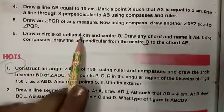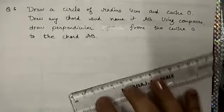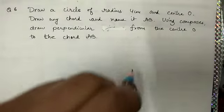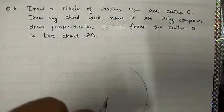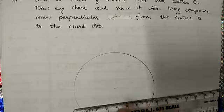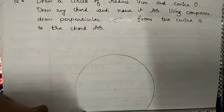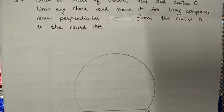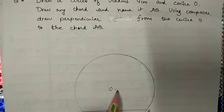Sixth question I am going to discuss with you. We are to draw a circle of radius 4 centimeters and center O. Let us start. First of all, we will open our compass equal to 4 centimeters. Then we will draw a circle like this. Now we are to draw any chord and name it AB. Anywhere we have to draw a chord. So I have drawn a chord like this and name it AB.